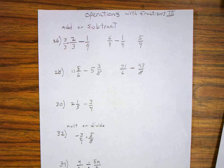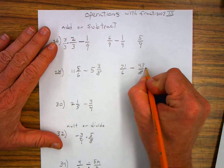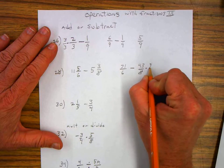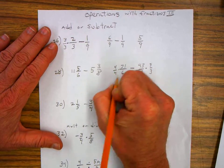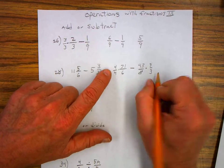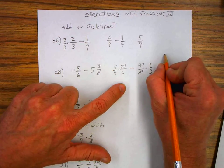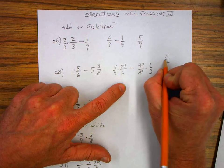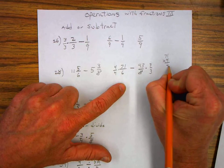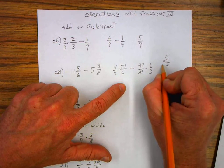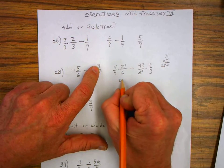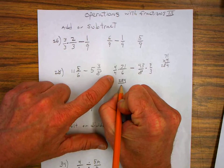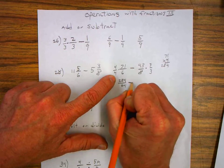Now the least common multiple for six and eight is twenty-four. So I multiply this side by four over four and this side by three over three. So now I have to multiply four times seventy-one and I get two hundred and eighty-four over twenty-four.